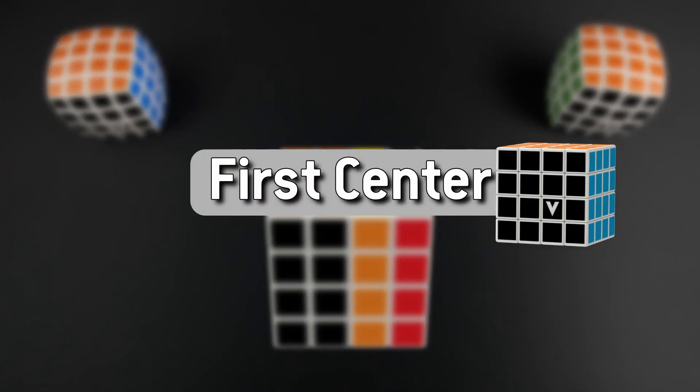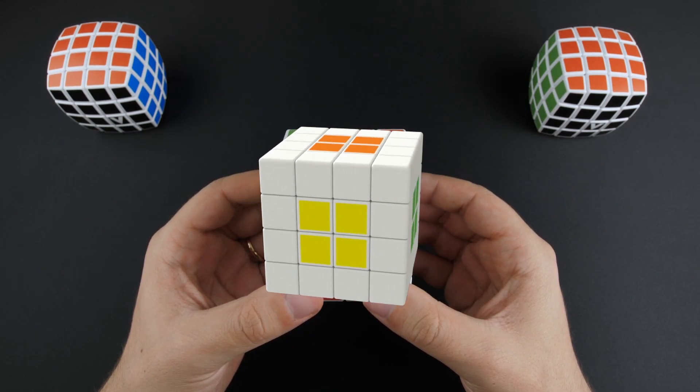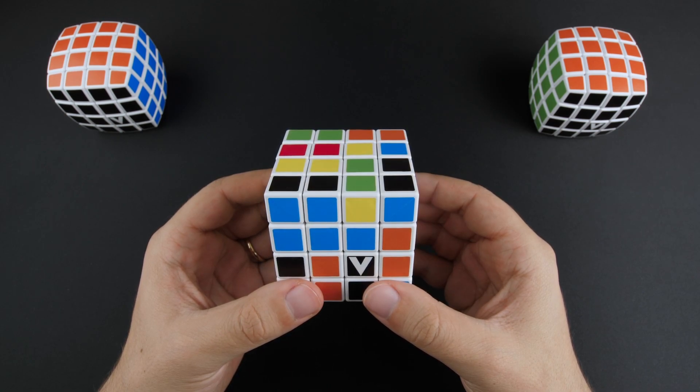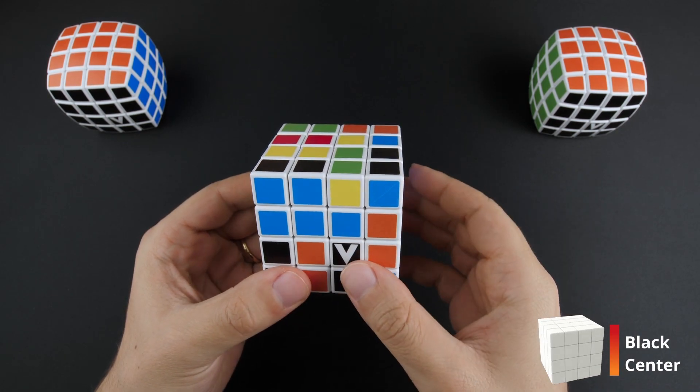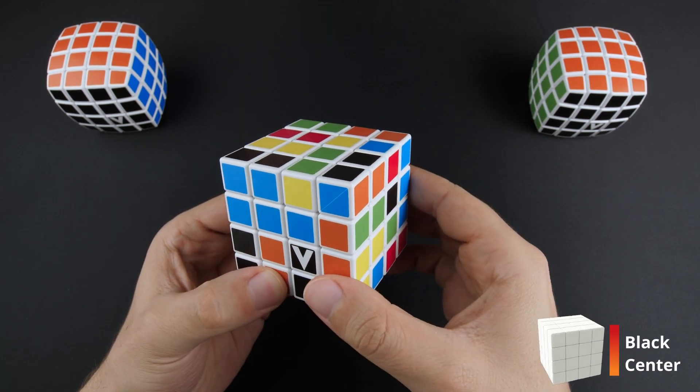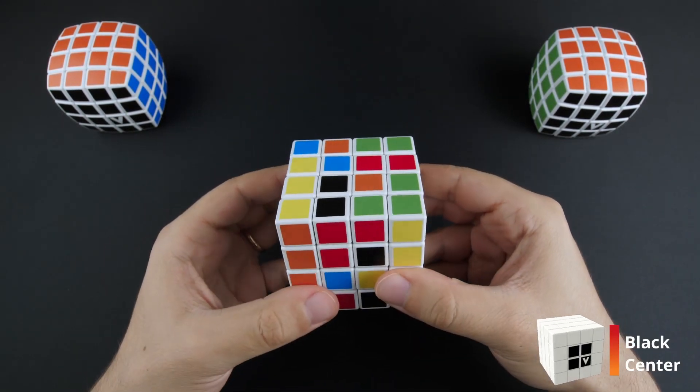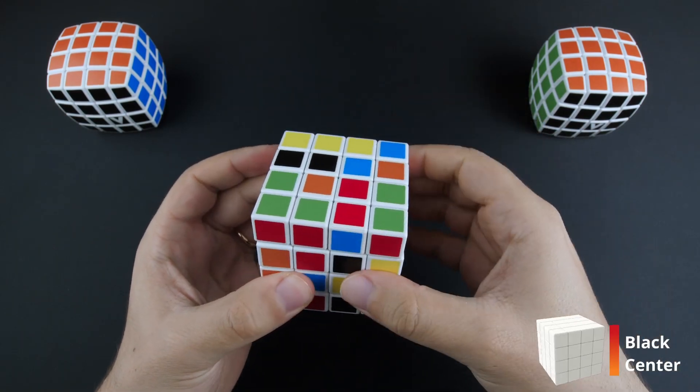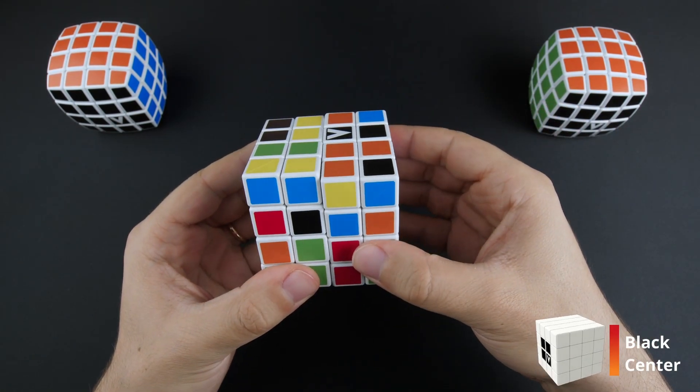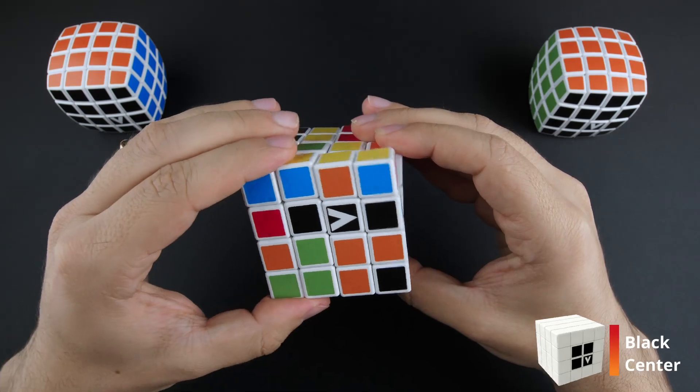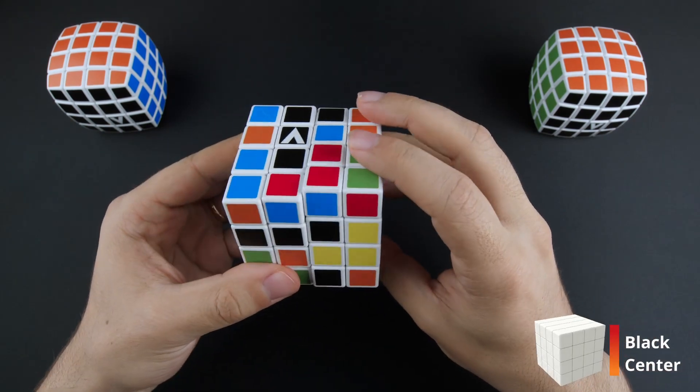The first center. The first step to making our 4x4 look like a 3x3 is to connect all the 2x2 centers. Let's start with the black center. In this puzzle, creating 2x1 bars will be our core move. For the first center, find two black center pieces and connect them into a bar. Then find the other two and connect them without messing with the first bar. If connecting this pair creates problems with the first pair, undo your last moves and turn the first bar vertically. Now you can connect the second bar. Finally, connect the two bars. It is quite easy.